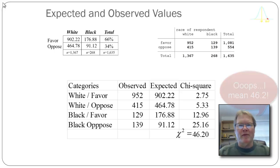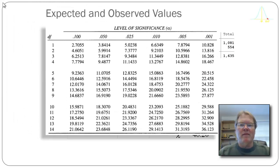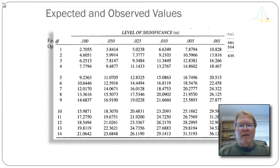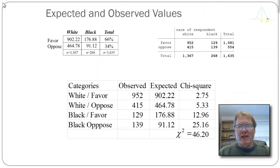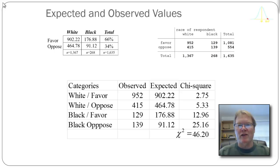My degrees of freedom are (number of columns minus one) times (number of rows minus one), giving me one degree of freedom. Setting alpha equal to 0.01 and looking at a chi-square table — finding the first row and reading across to the column labeled 0.01 — I find that chi-square critical is 6.6349. Since 46.12 exceeds that value, I reject the null hypothesis and conclude that these two variables are associated: white respondents are more likely to favor capital punishment than black respondents.